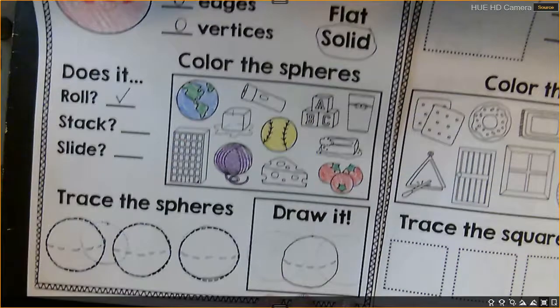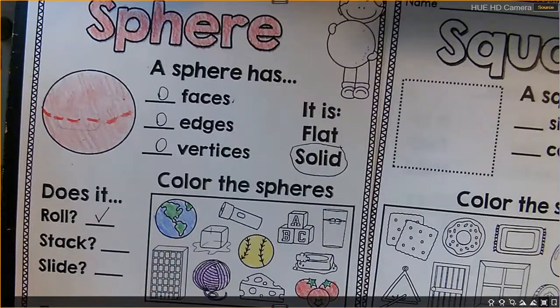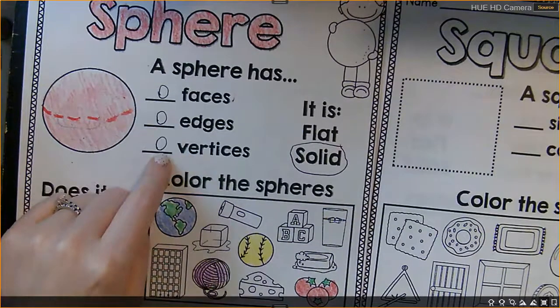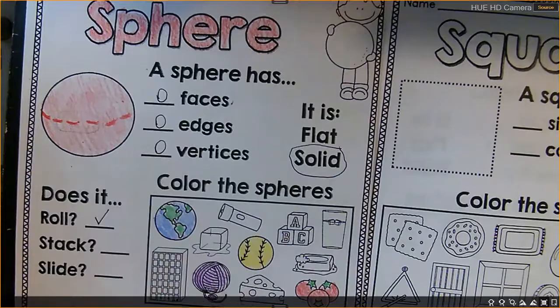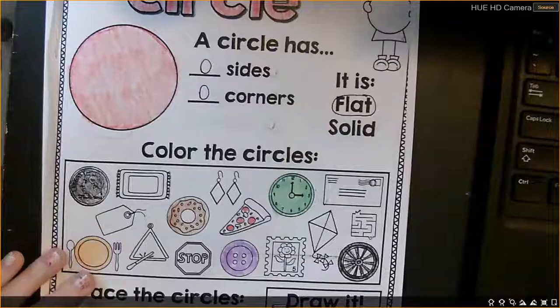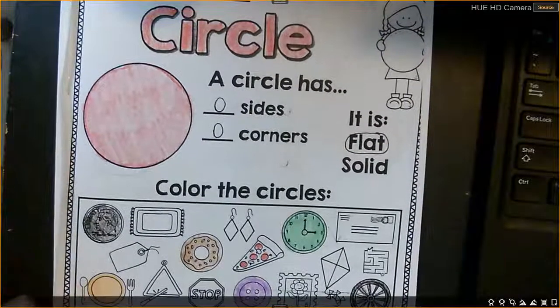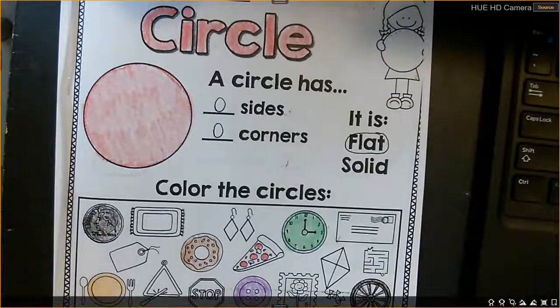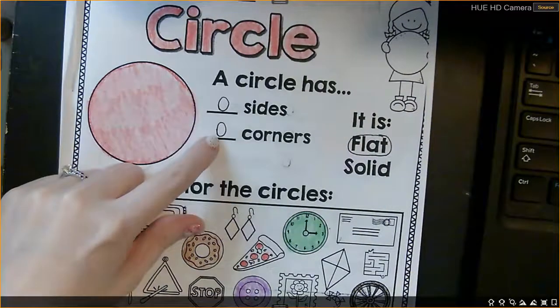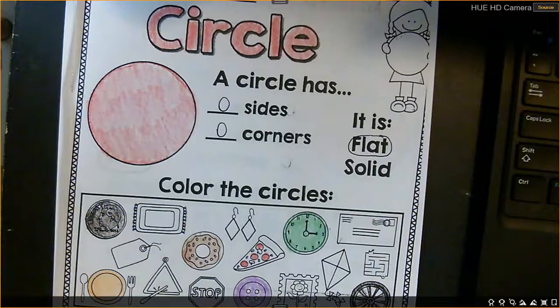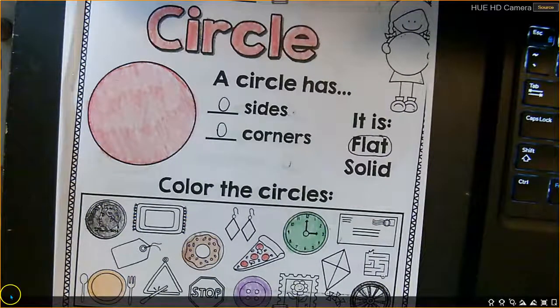So we learned two different shapes today. We learned the sphere, the 3D shape. It has zero faces, zero edges, zero vertices. And we learned the circle. The circle is a 2D shape. It is flat and it has zero sides and zero corners. Thank you for working with me today.